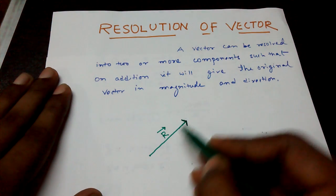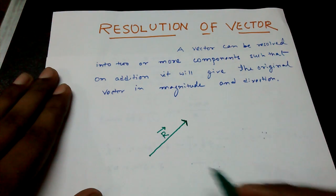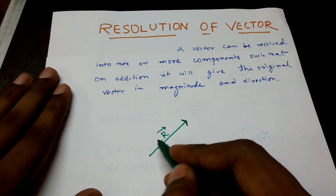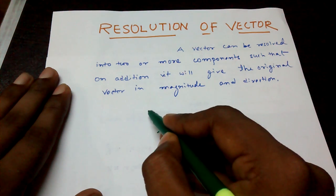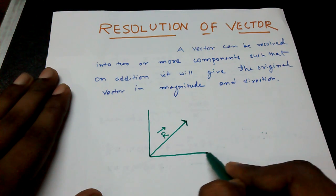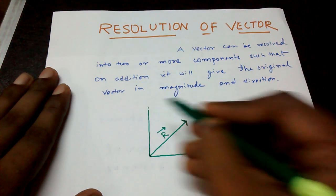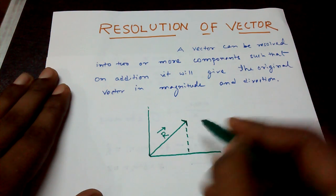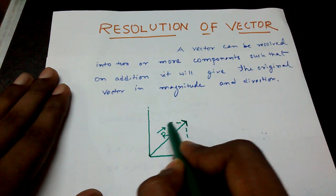This is the starting point, this is the ending point. Now at the starting point, that is at the tail, I am trying to make X axis, Y axis. And from the tip I am drawing a perpendicular on the X axis and Y axis.